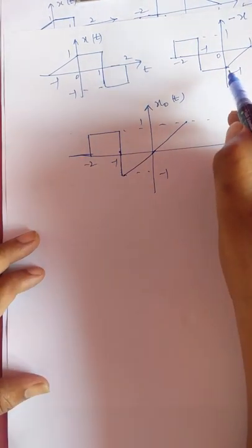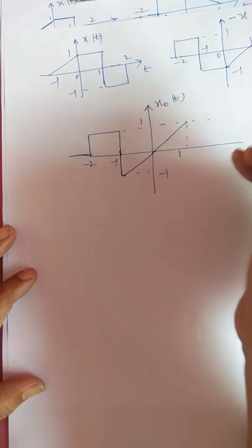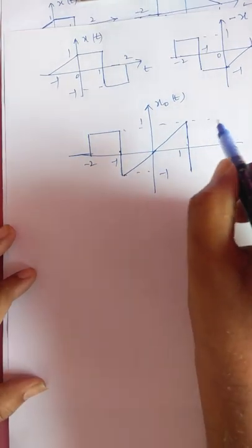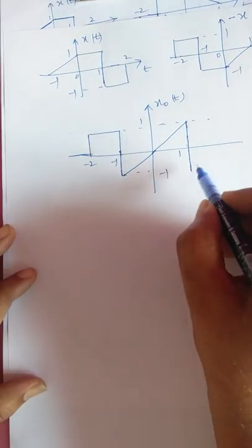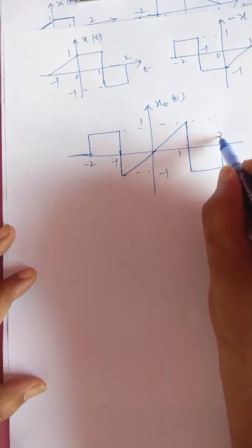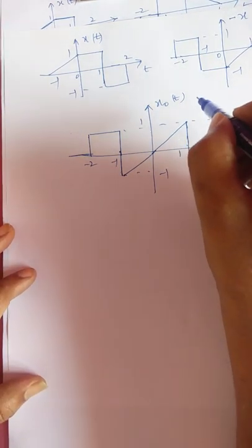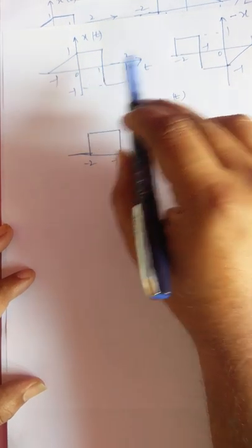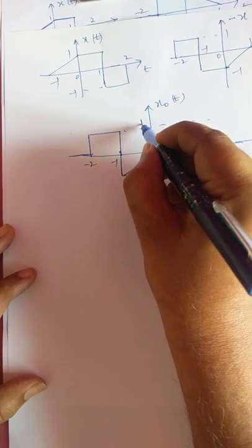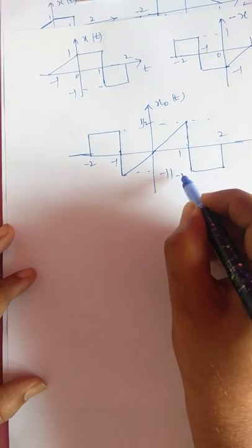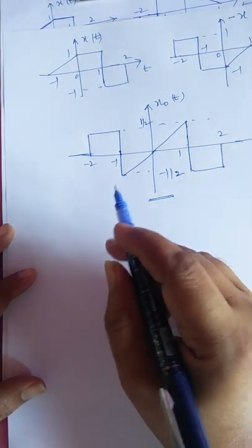Next, 1 to 2: at t = 1 the value comes to minus 1; x(-t) does not exist in this interval, so only x(t) contributes, giving a value of minus 1 from 1 to 2. The odd component xo(t) = [x(t) - x(-t)] / 2, so dividing by 2: the maximum amplitude 1 becomes 1/2, and minus 1 becomes minus 1/2. This is the odd component of the signal. This completes the problem.